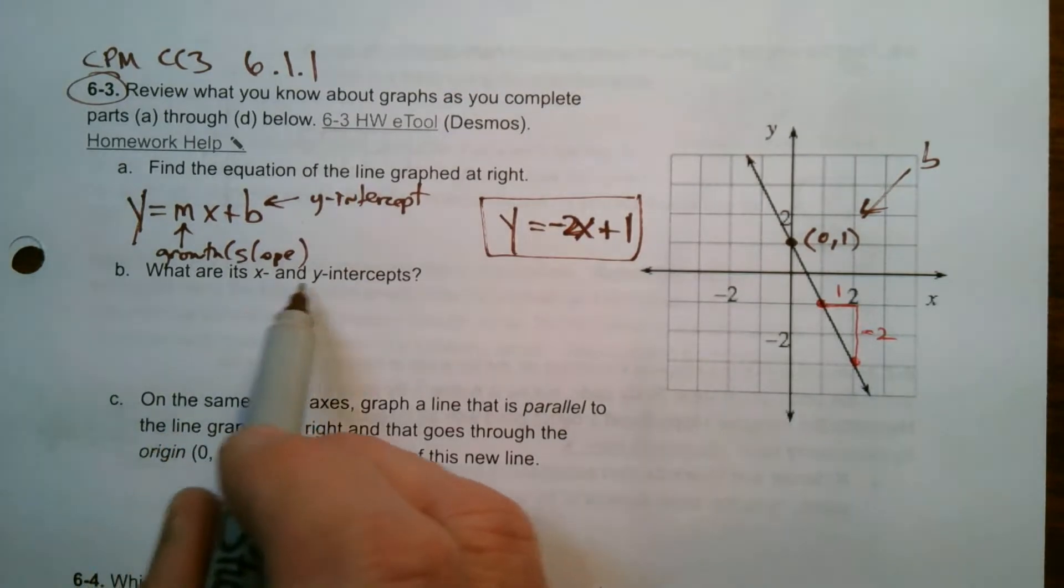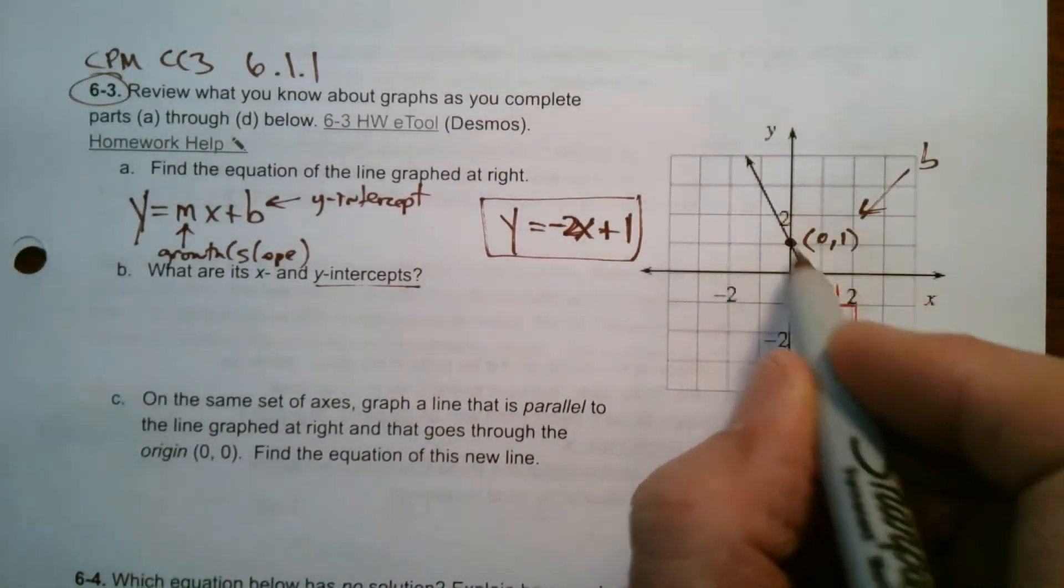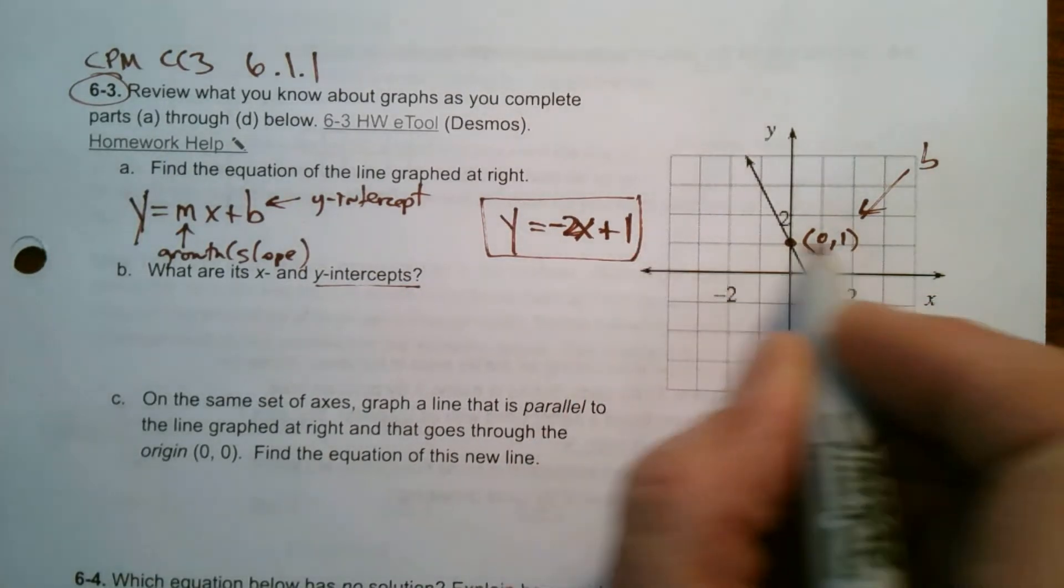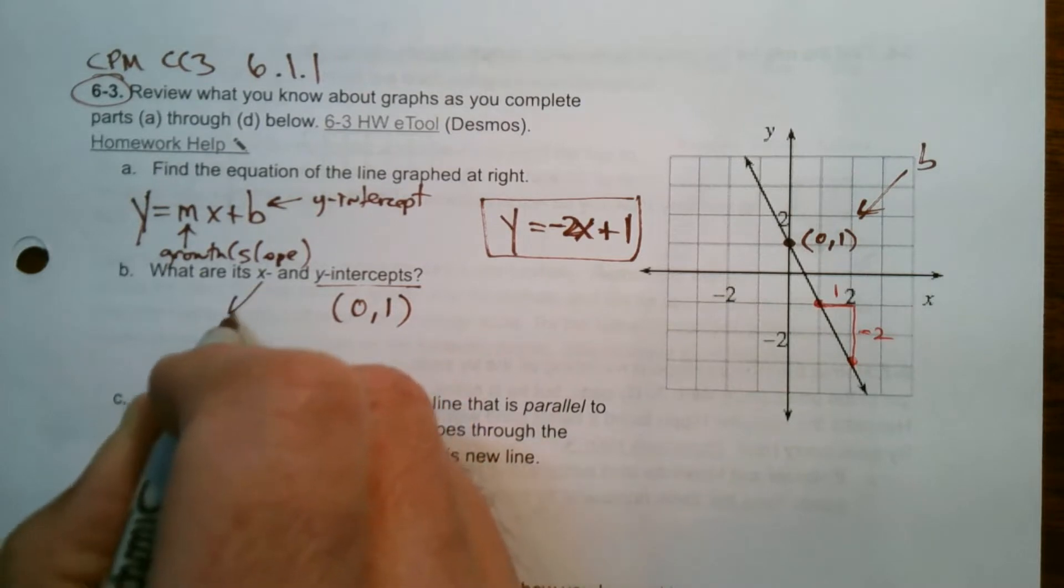So then it wants, what are the x and y intercepts? Well, y intercept, we already discovered because that's the initial value, that's the b that I'm starting with. So the y intercept is 0, 1. So I just got to figure out what that x intercept is.